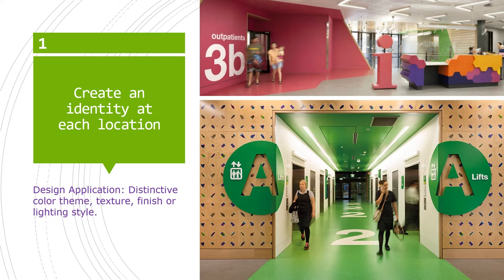You're creating an identity at each location: you get off the elevator and all of a sudden the floor and ceiling are green, all the signage is green, there's a big A and a bunch of twos on the floor. Go one more floor up and everything is a magenta color — there's a big three instead of a two, a B instead of an A, the walls and floor are that red color. So you know you're in a different zone. The person in the space can recall either what color, letter, or number they saw to understand where they were. Design applications include distinctive color themes, textures, finishes, or lighting styles.